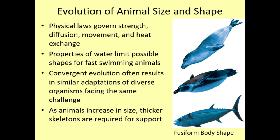As an example, we can use water. Water is more viscous than air — more dense, harder to move through. The properties of water limit the possible shapes for fast-swimming animals. If you want to live in water and move through it quickly, you have to have a specific body shape. Because of that, we see something called convergent evolution in many aquatic animals. Convergent evolution is where we see similar adaptations in diverse organisms because they face the same environmental challenges.